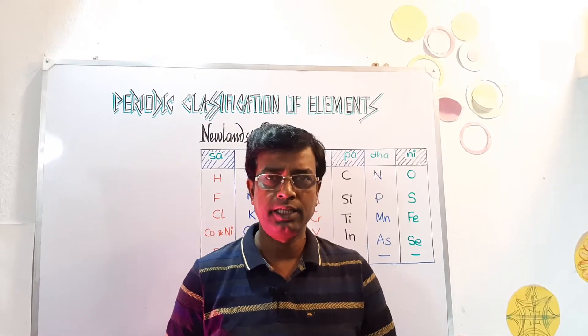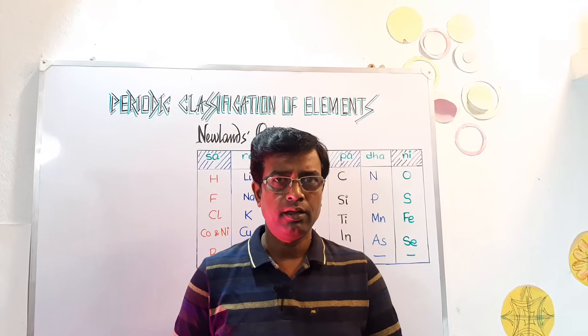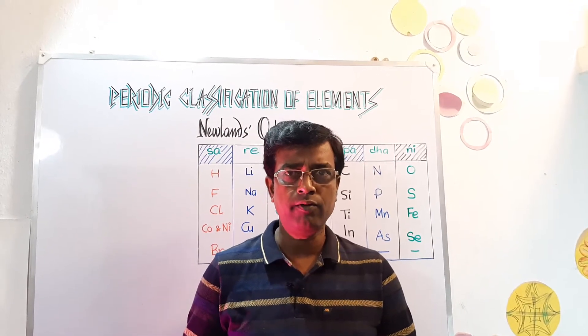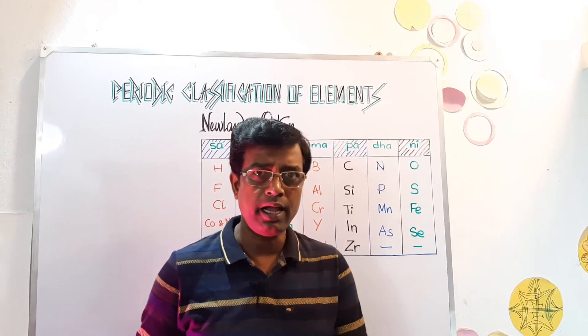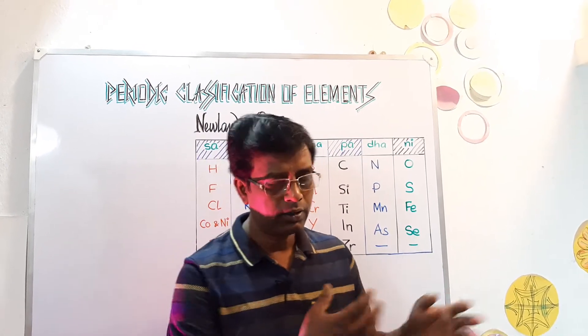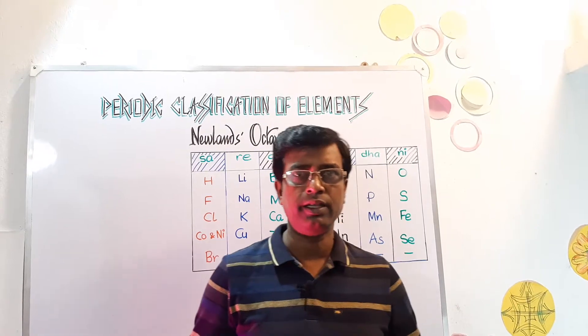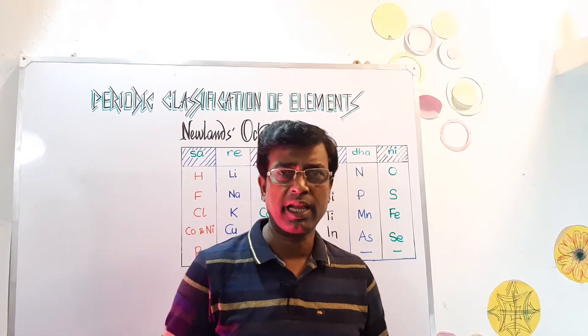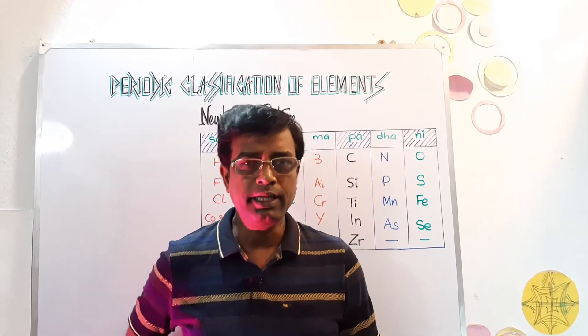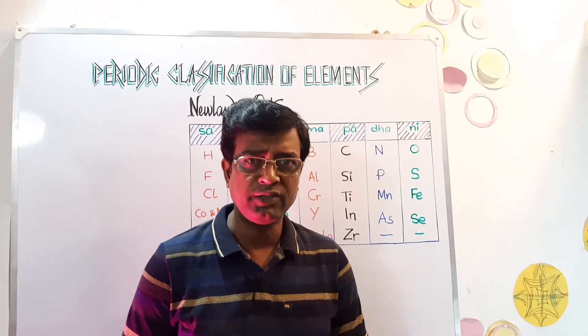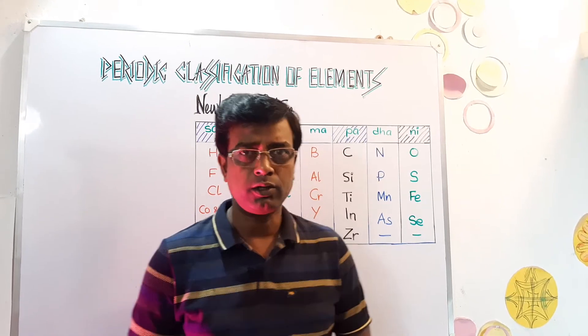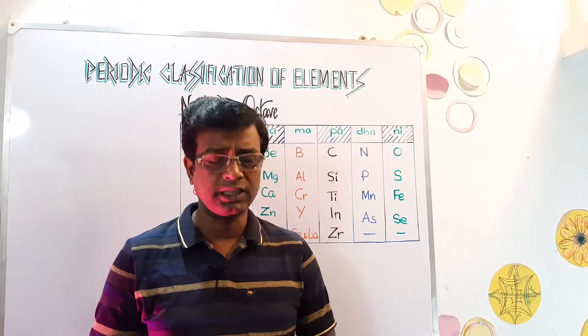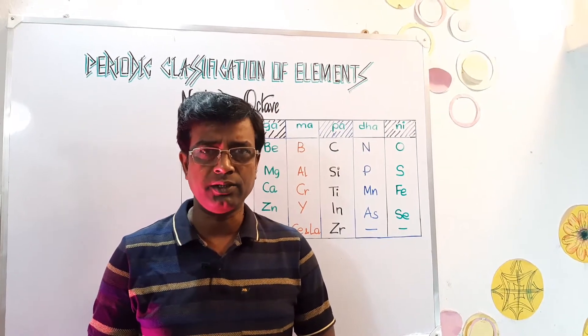In the previous session, we have taken the attempts of Doberiner, where we highlighted how he was the pioneer and the first one to try to classify the available elements into different groups based upon their similarities of properties. His efforts were indeed praiseworthy but the shortcoming was that he could not classify all the then available elements into groups.